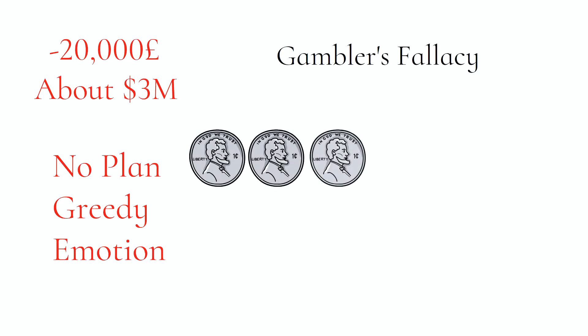Newton had no plan, got a bit greedy, and let emotion play the game. Newton was the victim of Gambler's Fallacy. Flipping a coin 5 times and getting heads 5 times doesn't mean at the 6th flip a head or tail will appear. Judging future events in contrast to past events is Gambler's Fallacy. Each event is independent of previous events.